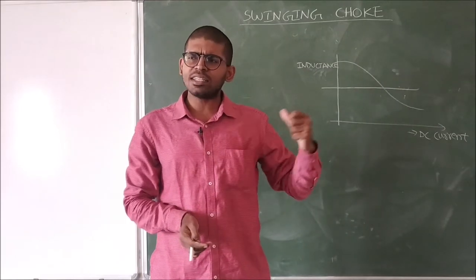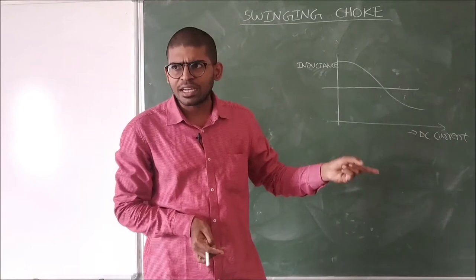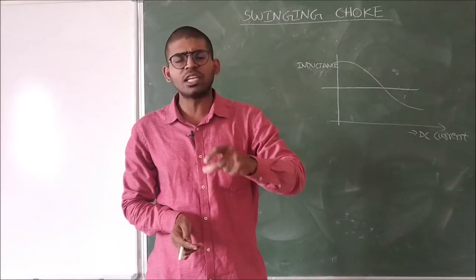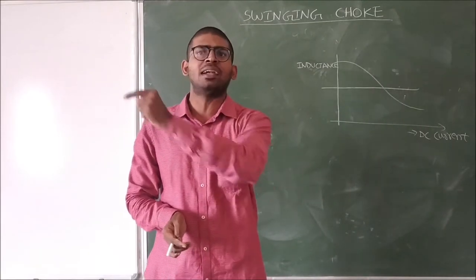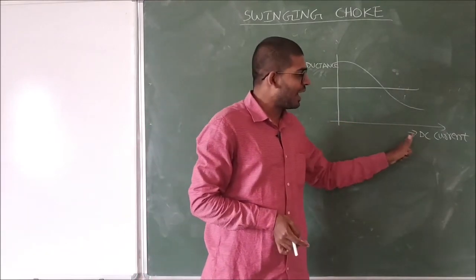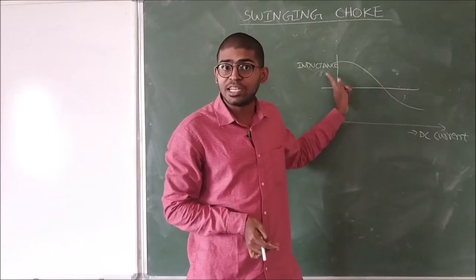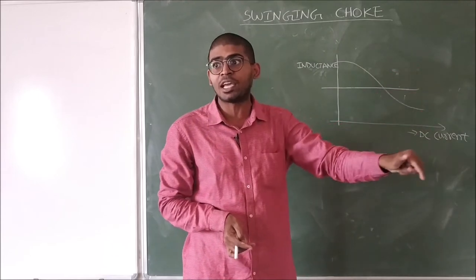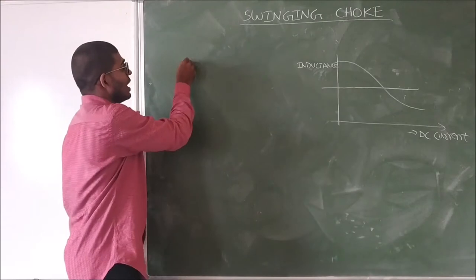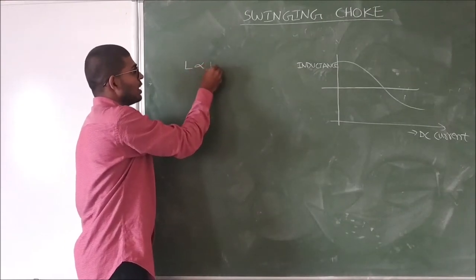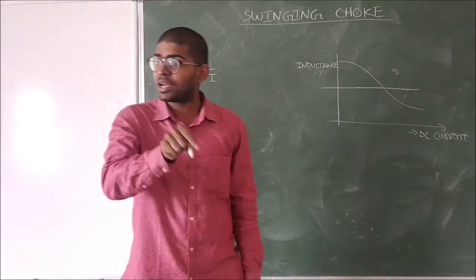Its inductance value swings with respect to what factor? Its inductance value is changing with respect to the applied DC current. Whenever the applied DC current is increasing, its inductance value is decrementing. So in the swinging choke, the inductance value is inversely proportional to the applied current.